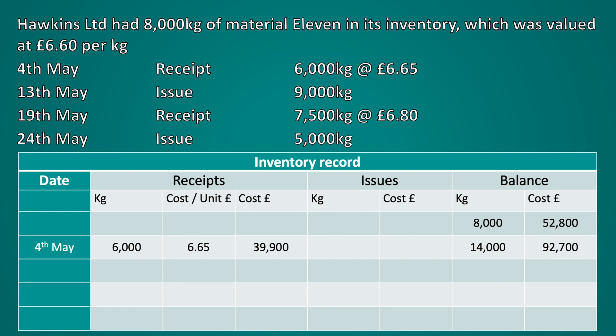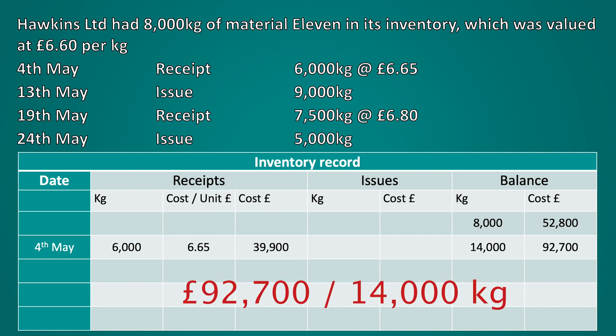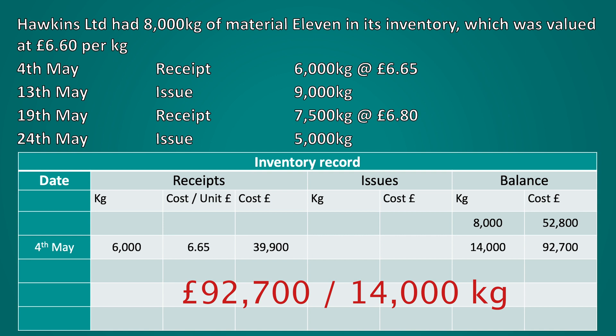Now we need to record our first issue on the 13th of May. Under the weighted average inventory valuation method we start by calculating the average price of inventory. To do this we take our existing balance of £92,700 and divide it by the number of kilograms, which will be 14,000. This gives us the average amount per kilogram.